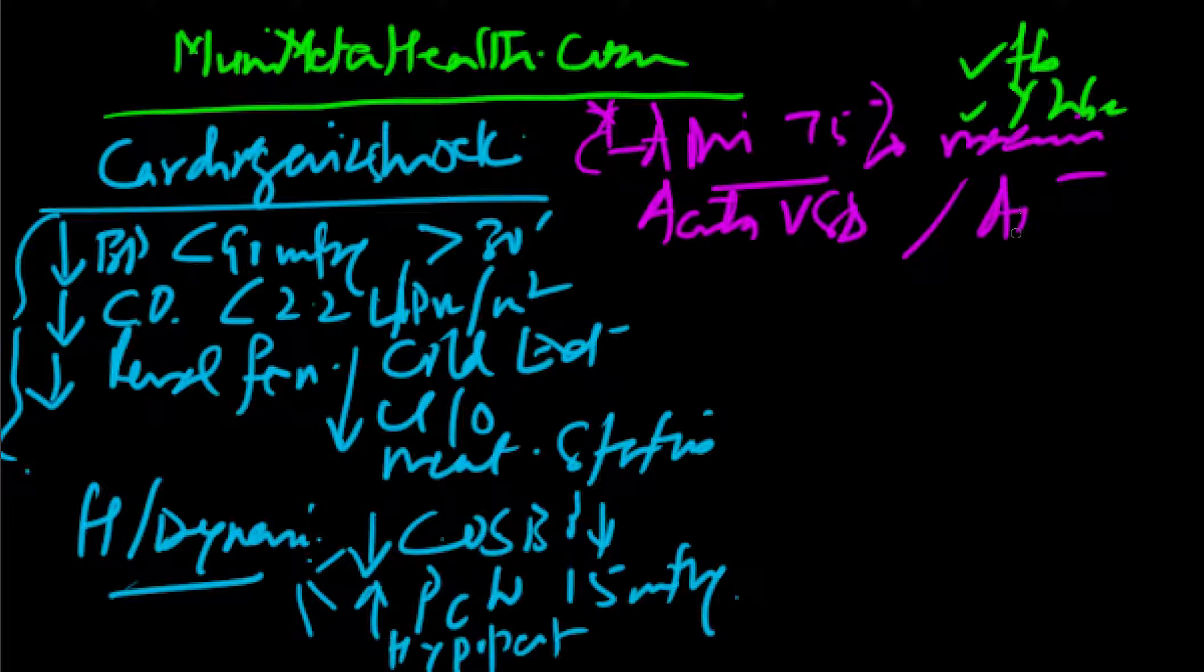Or it could be an acute MR that can develop, so mitral regurgitation that can develop either because of papillary muscle infarct, or an infarct in the belly of the papillary muscle, either of the papillary muscles within the left ventricle, or even the chordae tendineae which could be infarcted. So acute MRs can result in a rupture of an acute papillary muscle can result into an acute MR, and then the patient goes into a cardiogenic shock.